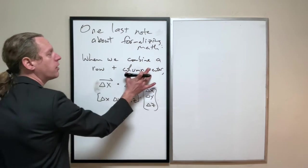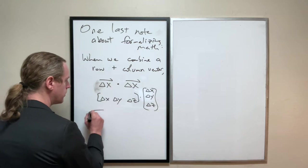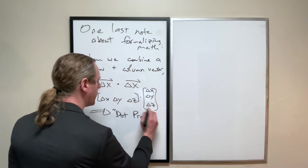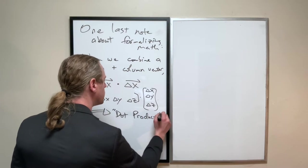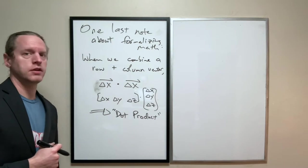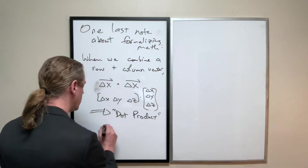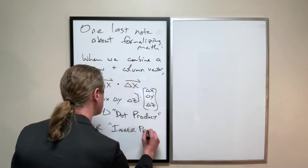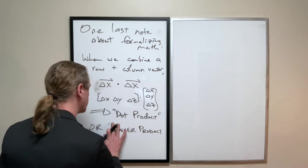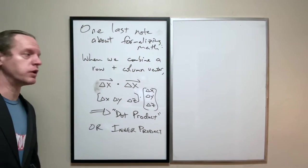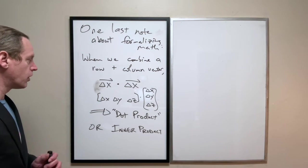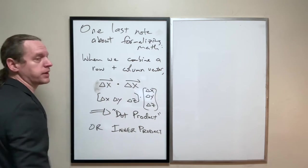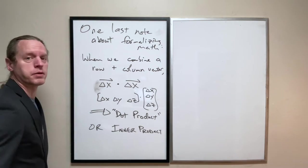So this is simply a dot product. When we combine a row and a column vector, we can call that a dot product, or the more proper term for this, the word that we're going to be using now is inner product. When you take a column vector dotted with a row vector, we have an inner product.